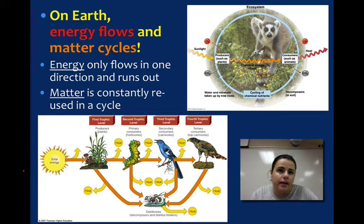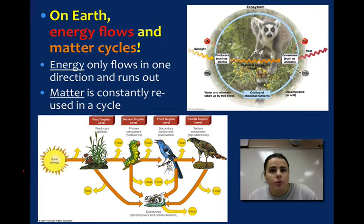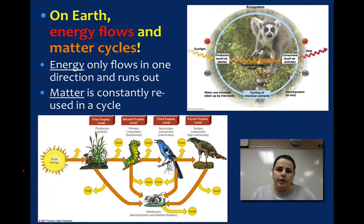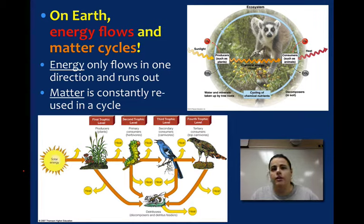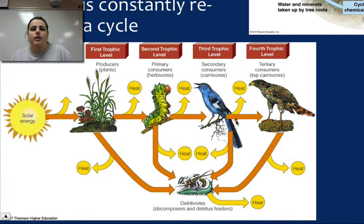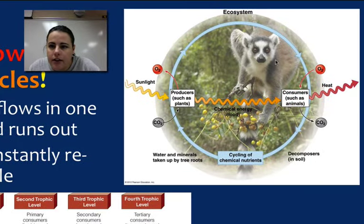Energy does not get recycled on our Earth — it's actually unidirectional. The sun supplies it to the producers, the producers get eaten by the herbivores, the herbivores get eaten by the carnivores through food chains and webs. The energy gets passed along, it dissipates, and gets less and less every time it gets passed along, and eventually it runs out. So energy flows and it's unidirectional. This simple food chain shows the sun providing energy through different levels, passing it to the next organism, with heat — a form of energy — being lost along the way.